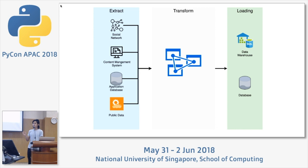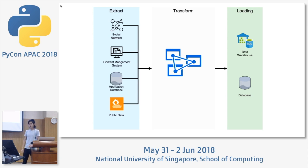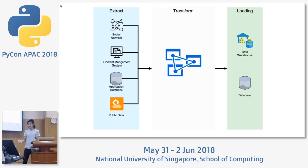ETL means extract, transform, and load. Typically, we want consumers of ETL to be applications that display data or feed into machine learning models. We want as much varied data as possible — social media like Facebook and Instagram, CMS data like customer profiles, application databases, weather data, and traffic data. All this data comes into play when making decisions about which customers to target.